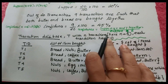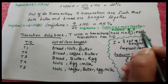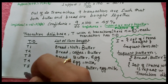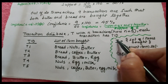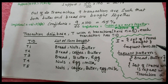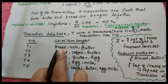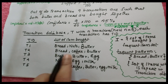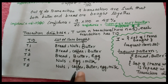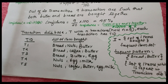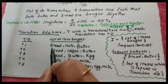Next, we discuss the transaction database T with N number of transactions. In this example there are five transactions, so N equals 5. Each transaction has a transaction ID: T1, T2, T3, T4, T5. For each transaction there is a list of items bought, denoted by I — the set of items bought, also called frequent item sets. T1 buys bread, nut, butter; T2 buys bread, coffee, butter; T3 buys bread, butter, egg; T4 buys nut, egg, milk; T5 buys nut, coffee, butter, egg, milk.